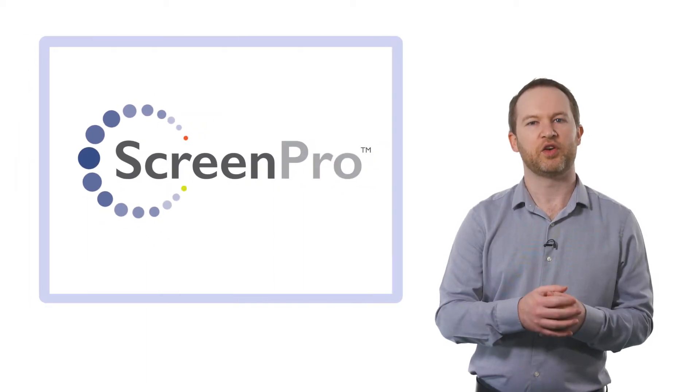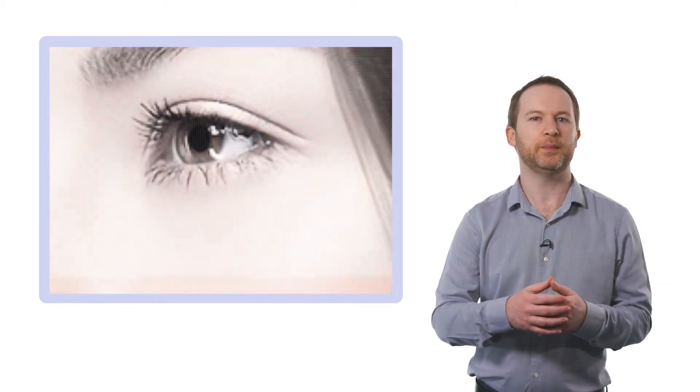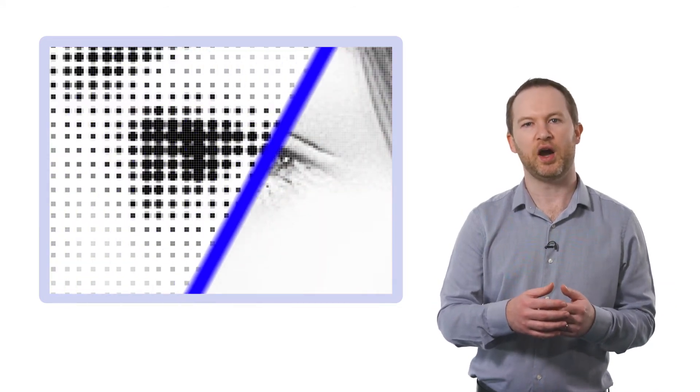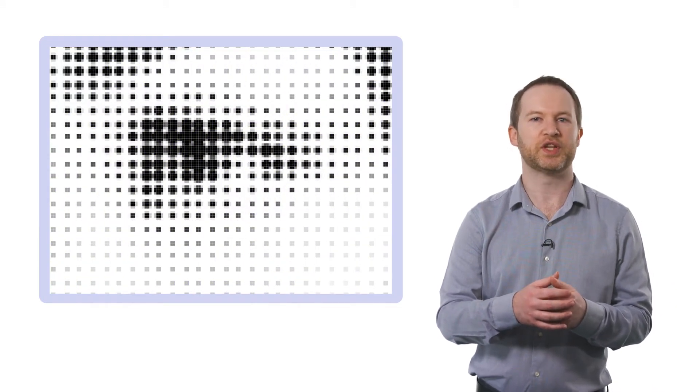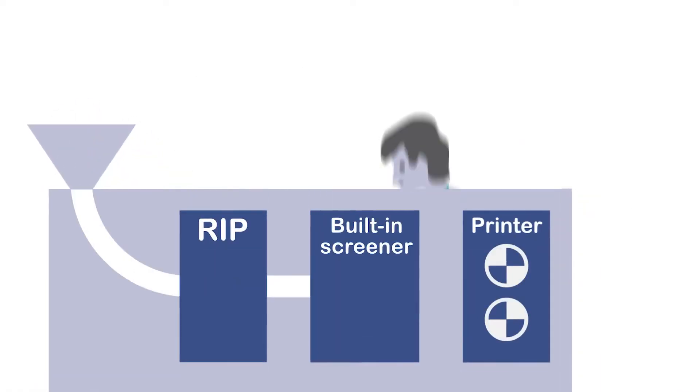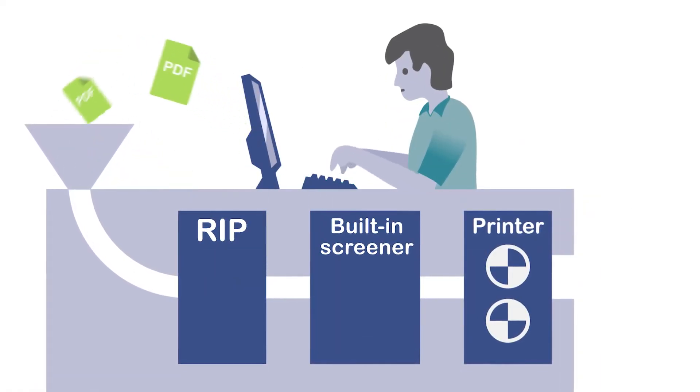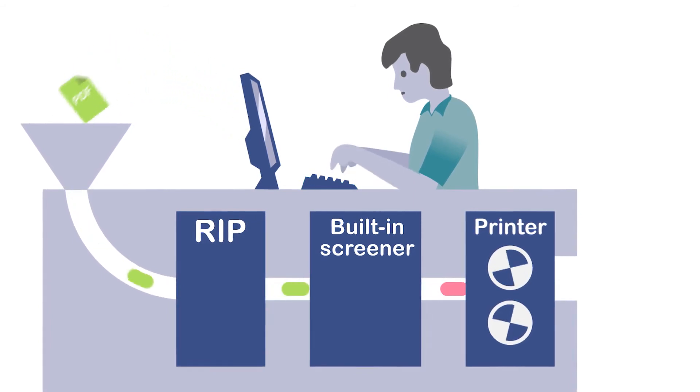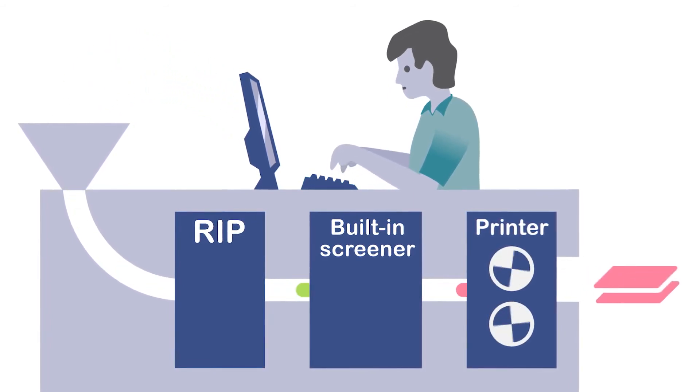ScreenPro is Global Graphics Software's award-winning screening engine that converts continuous tone image data into ready-to-print halftone screen data in real-time. It's designed to enable printer manufacturers to maximize the performance of their digital printers and get to market quicker.